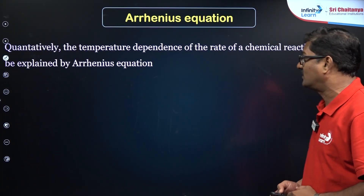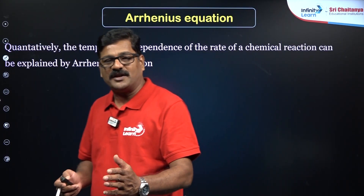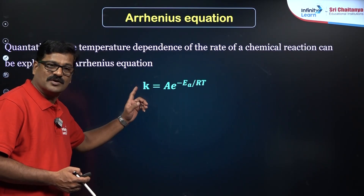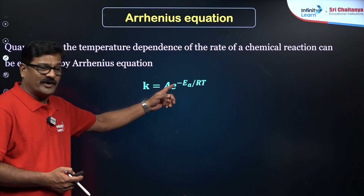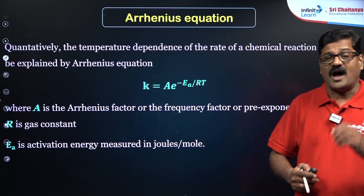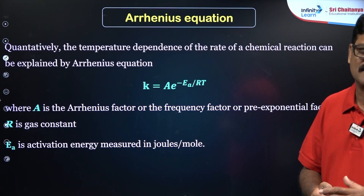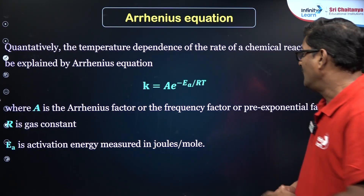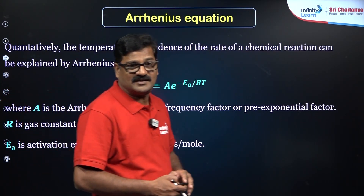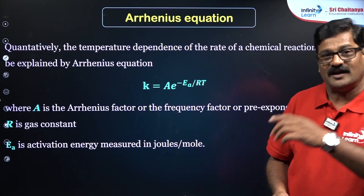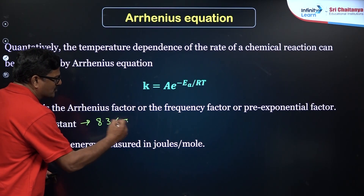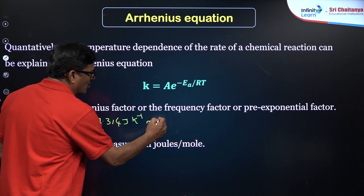The Arrhenius equation quantitatively gives the temperature dependence on rate constant: K = A · e^(−Ea/RT), where K is the rate constant, A is the Arrhenius factor (also called pre-exponential factor or frequency factor), Ea is the activation energy, R is the gas constant, and T is the temperature in Kelvin. Always use R = 8.314 J K⁻¹ mol⁻¹.